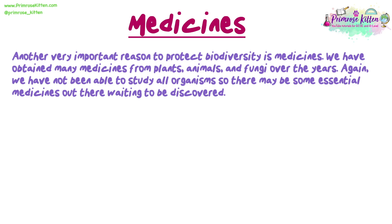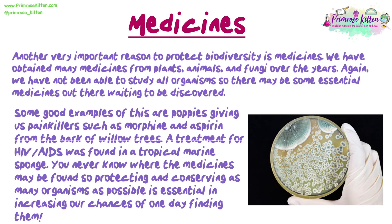Medicines. Another very important reason to protect biodiversity is medicines. We have obtained many medicines from plants, animals and fungi over the years. We have not been able to study all organisms, so there may be some essential medicines out there waiting to be discovered. Some good examples are poppies giving us painkillers such as morphine, and aspirin from the bark of willow trees. A treatment for HIV-AIDS was found in a tropical marine sponge. Protecting and conserving as many organisms as possible is essential in increasing our chances of one day finding them. The image shows penicillin mould, which we use as an antibiotic all the time — imagine how many people it has saved over the years.